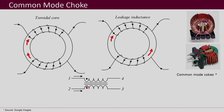The winding is such that the dots are at the point where the current enters in both of these coils. When we talk about common mode currents, the current direction is the same for both the line as well as the neutral, and it returns through the ground. Whereas for differential mode current, the direction is opposite for line and neutral — if it is in the forward direction for the line, for the neutral it will be in the opposite direction.